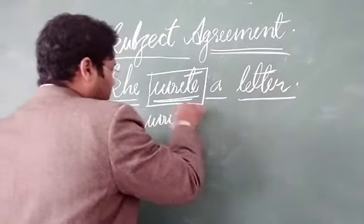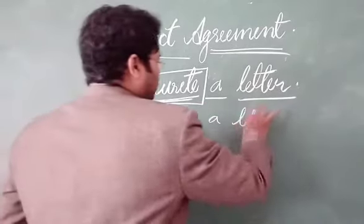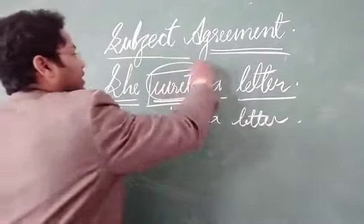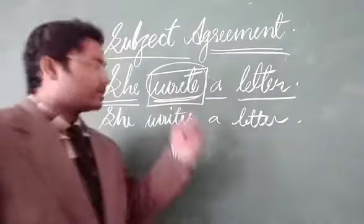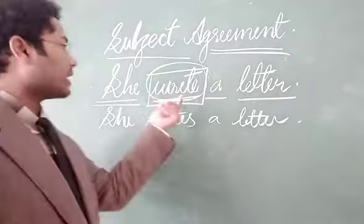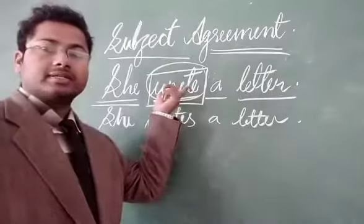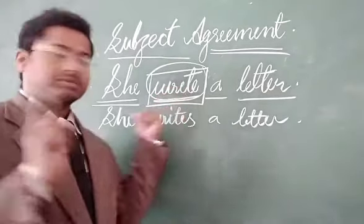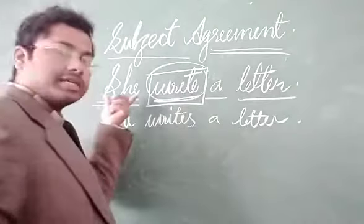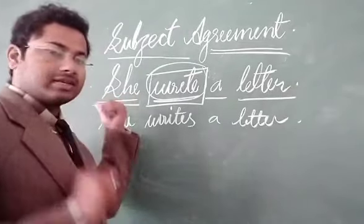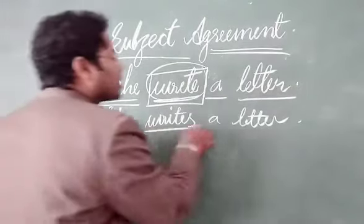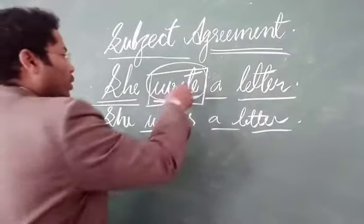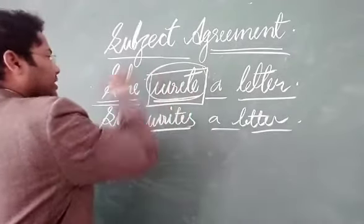She writes. She writes a letter. There is an error in this sentence — 'write' will be changed into 'writes' because 'she' is a singular noun. So, she writes a letter. This is the agreement of the verb with its subject.